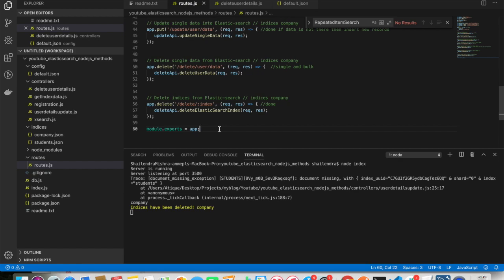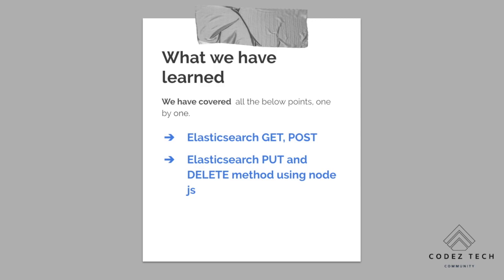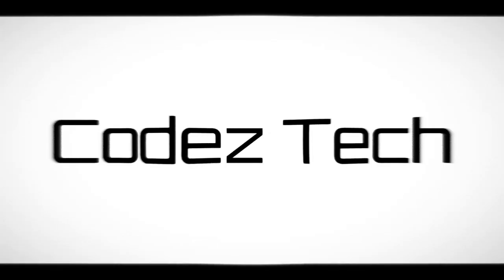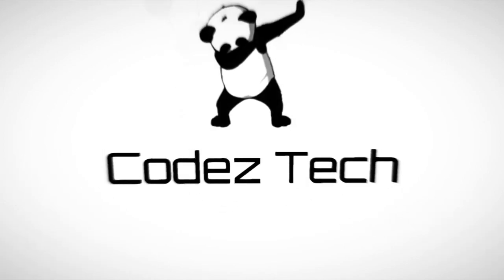This is all about Elasticsearch APIs demonstrated via Node.js. I'll put all the code in my GitHub repository and post the link in the description below — you can download and play with it. In this tutorial we learned about Elasticsearch GET, POST, PUT, and DELETE methods. In the next tutorial we'll discuss what Kibana is and how to index data into Kibana. Thank you!